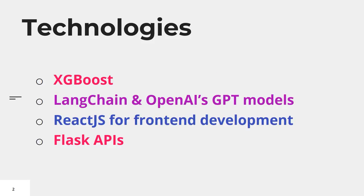We will use various robust technologies in this project. First, XGBoost — a powerful machine learning algorithm used for regression and classification problems. Second, Langchain and OpenAI's GPT models. These tools will help us process and analyze the soil data to provide meaningful insights.